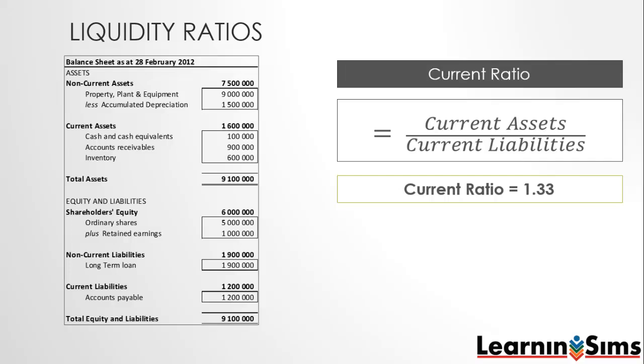A current ratio of 2.0 is occasionally cited as acceptable. However, a value's acceptability depends on the industry in which the company operates.